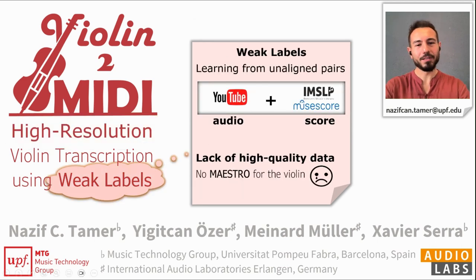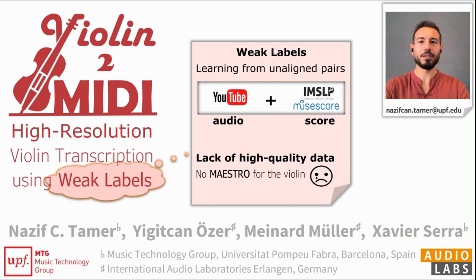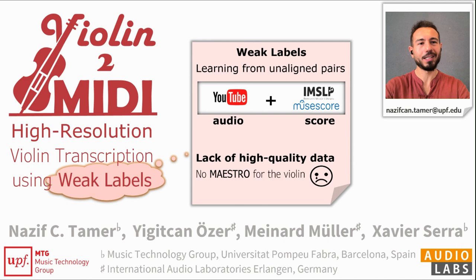By weak labels, we mean learning from unaligned pairs of YouTube recordings and scores collected from the web. We need this because for the violin, unfortunately, we do not have such high-quality datasets like the Maestro Piano dataset.